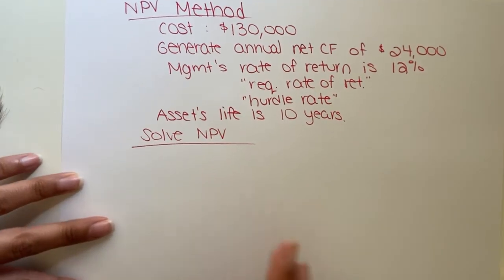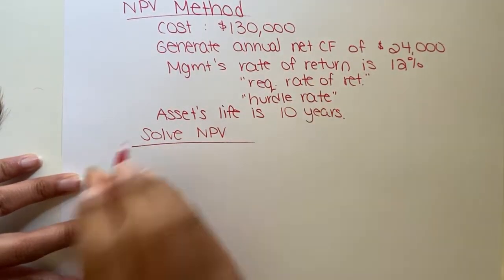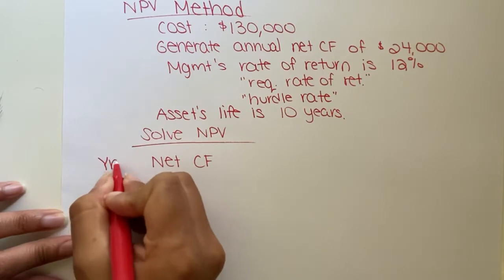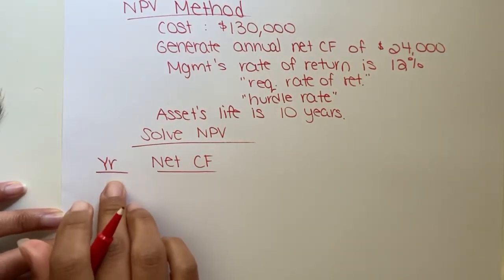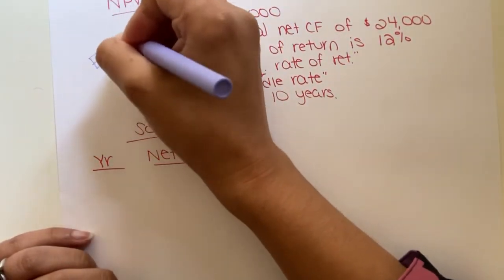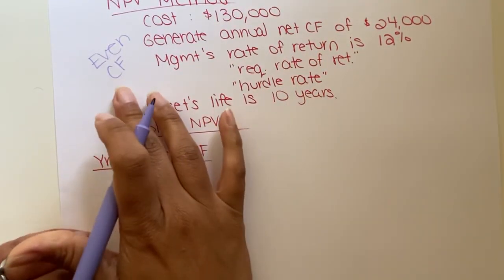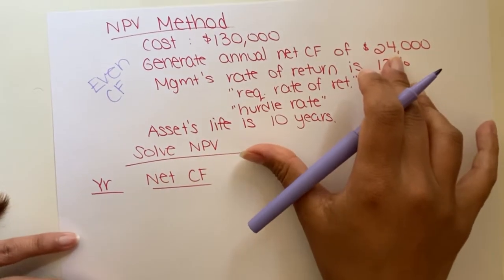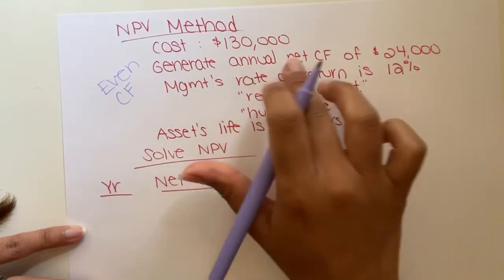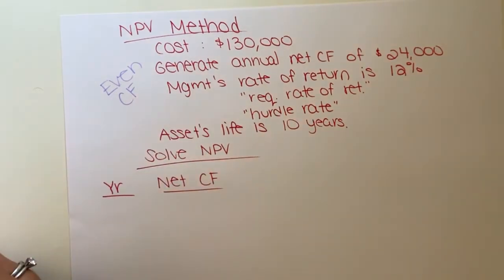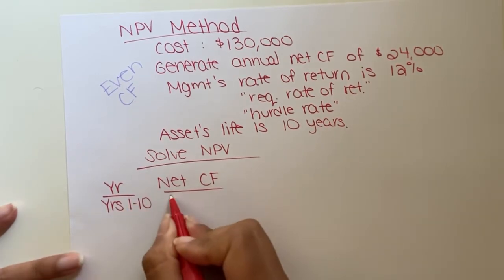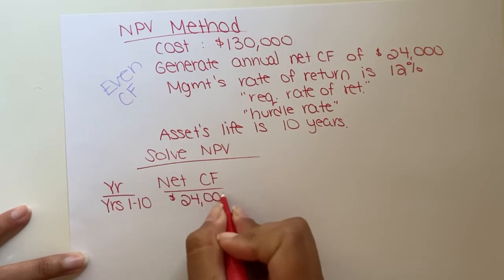To solve for NPV, I like to set up net cash flows by years. What's important is to identify if it's even cash flows or uneven cash flows. This is even cash flows. Why? Because we're not told that in year one it generates $24,000, in year two it generates $20,000. They give us one amount for each annual cash flow — so for years one through ten, our net cash flow is $24,000.